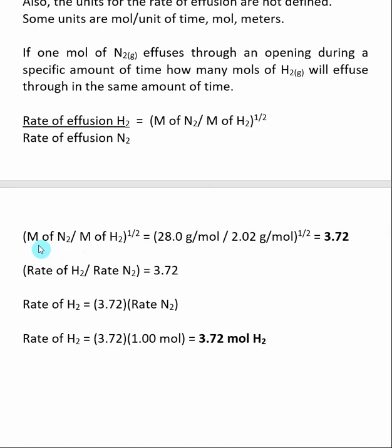So I go to the periodic table. I find the molar mass for N2, which is 28 grams per mole. I find the molar mass of H2, which is 2.02 grams per mole. I divide one by the other, and I take the square root. And then we get the number 3.72.